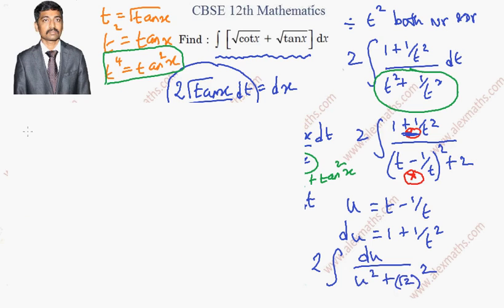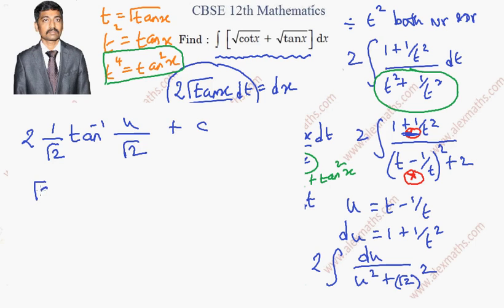The formula for this integral is (1/a) tan⁻¹(x/a), where a = √2. So we get 2 · (1/√2) · tan⁻¹(u/√2) + C, and the 2 and √2 simplify to give √2 · tan⁻¹(u/√2) + C.